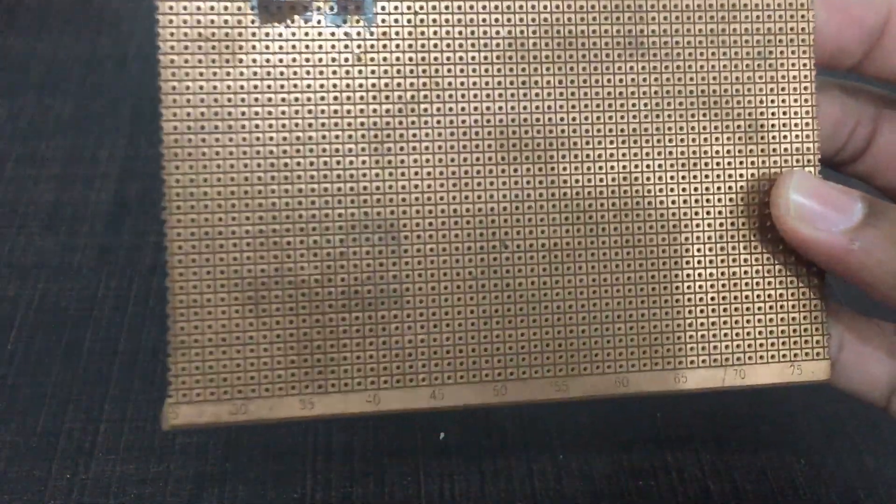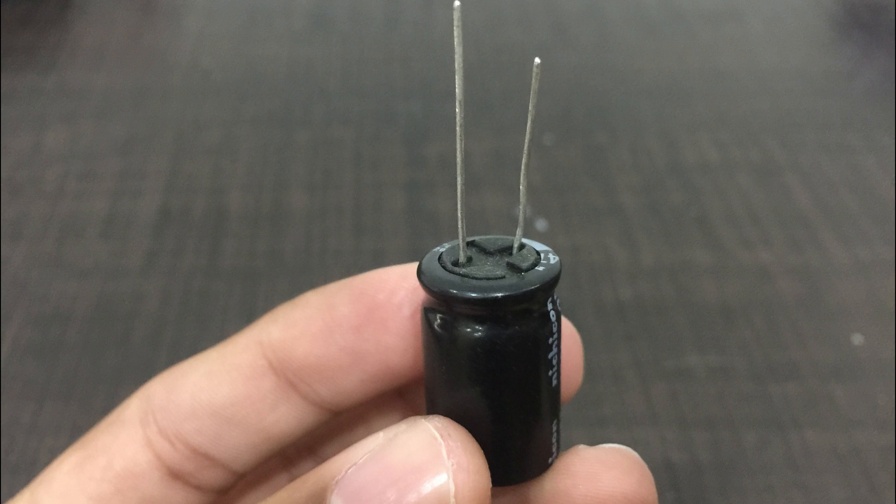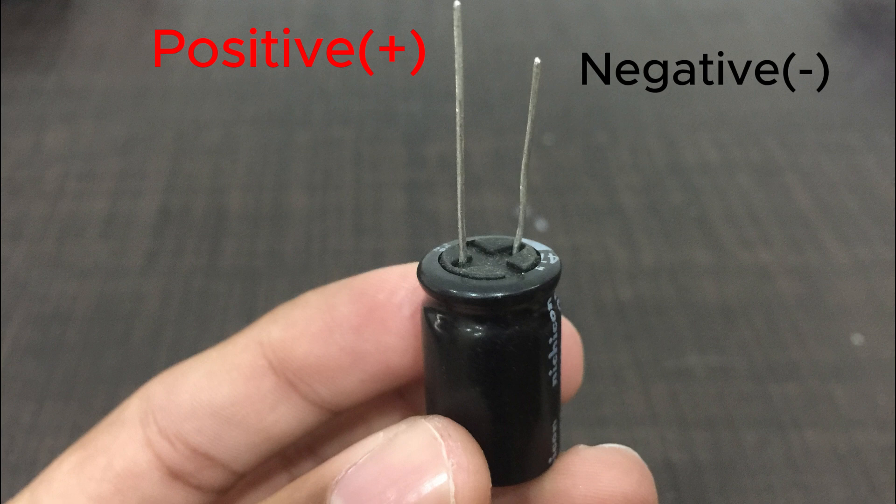I will be making the circuit on this piece of perfboard. One thing to keep in mind is that there are two wires coming out of the capacitor. The small one is our negative while the longer one is our positive.